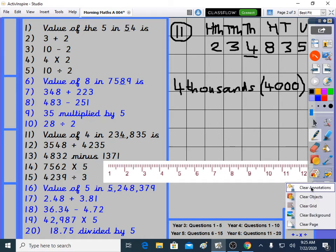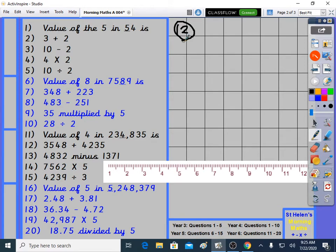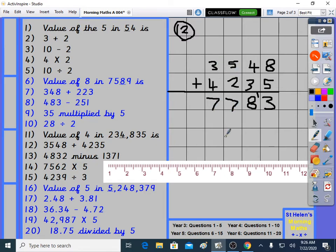Question 12 is 3,548 plus 4,235. 8 plus 5. What are we, year 5? So I'll go quite fast. 8 plus 5 is 13. 4 plus 3 is 7, plus 1 is 8. 5 plus 2 is 7. 3 plus 4 is 7. This is year 5, but it's only really a year 4 level question. If you're having trouble with 4 digits plus 4 digits addition, practice more. You'll get better.